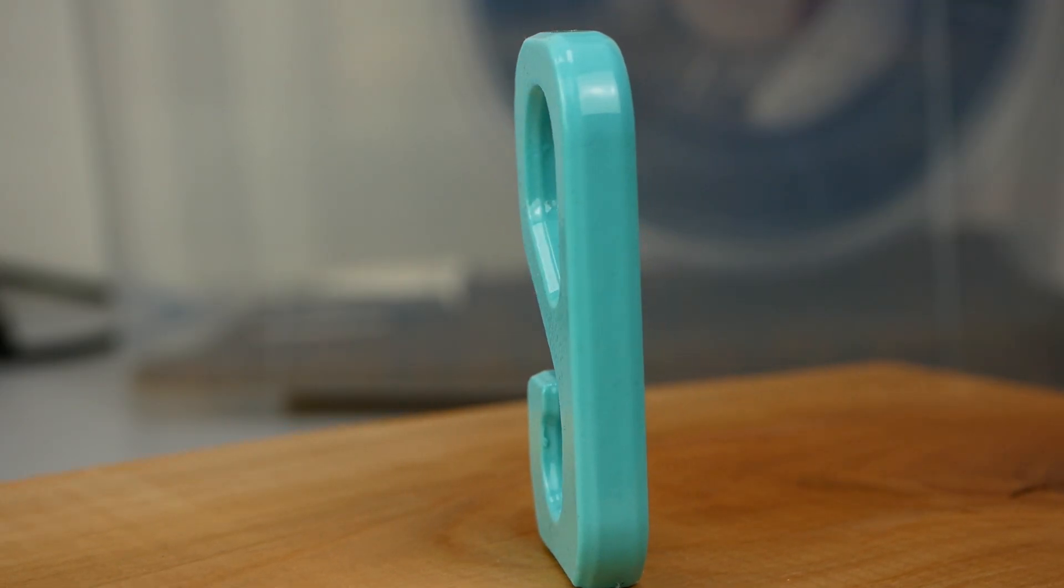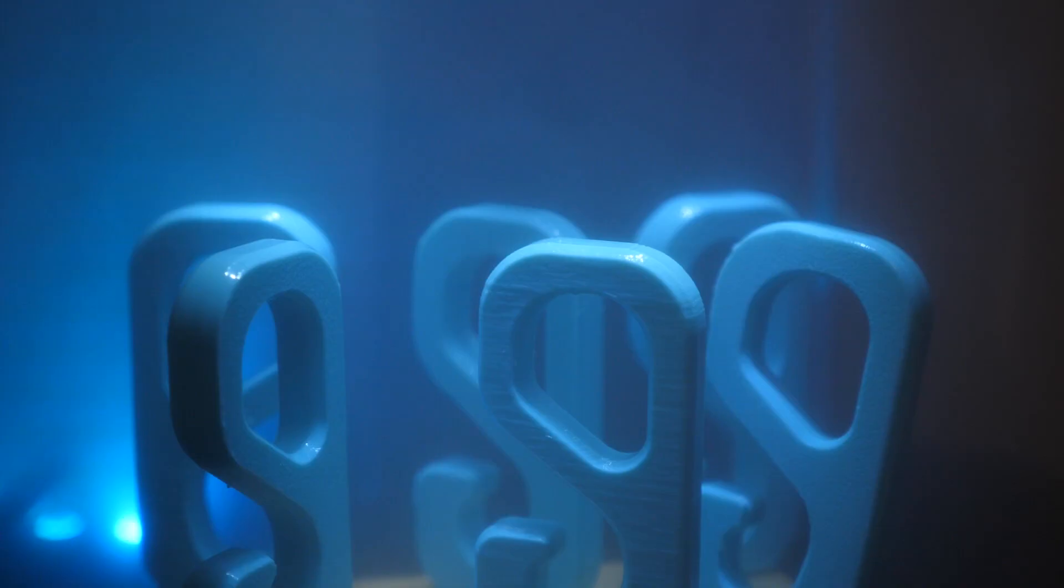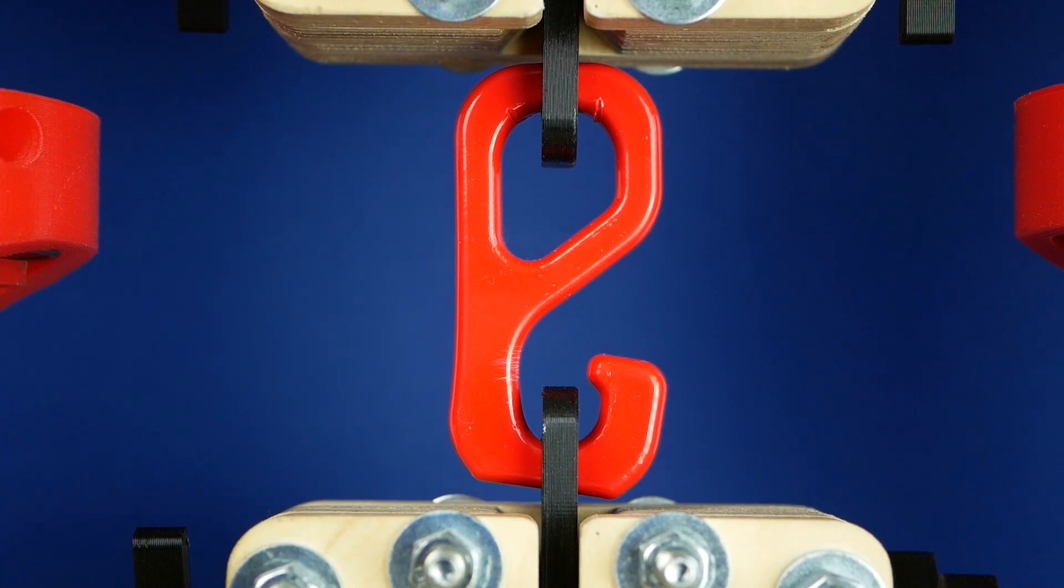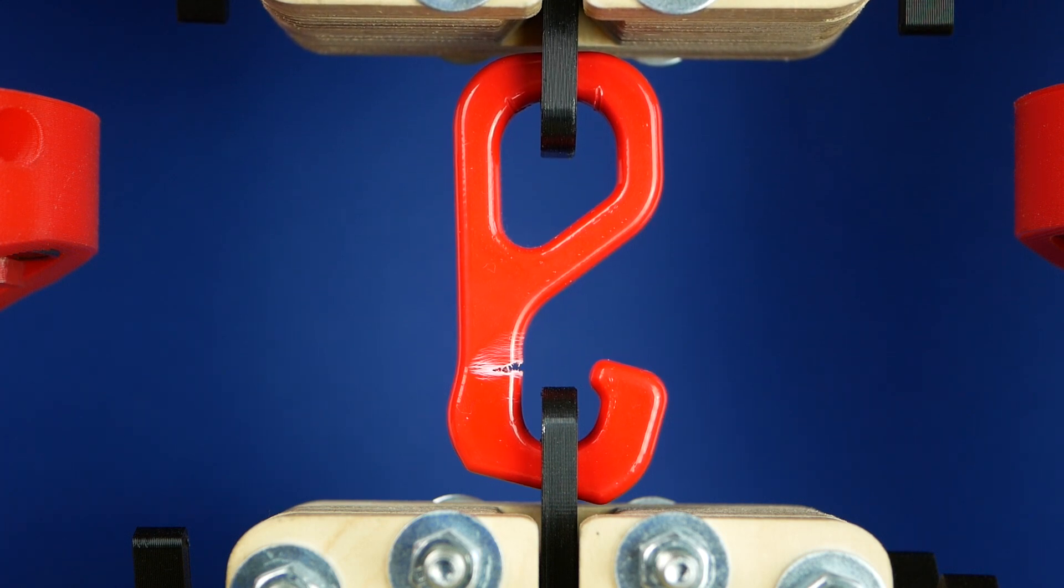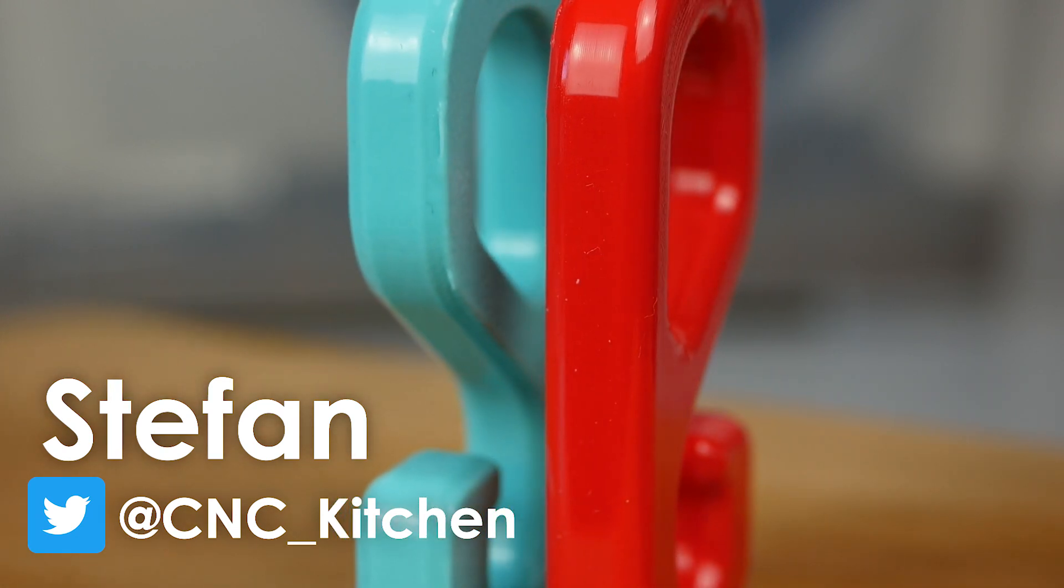Does vapor smoothing increase the strength of your 3D prints? I've smoothed the ABS parts with acetone and polysmooth with isopropyl alcohol and tested their strength against their untreated counterparts. Let's find out more! Guten Tag everybody, I'm Stefan and welcome to CNC Kitchen!